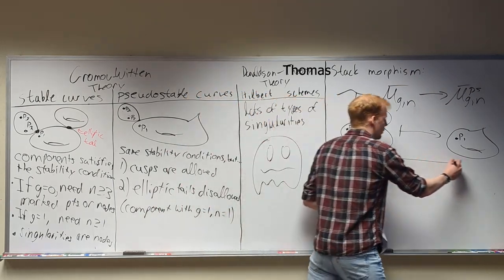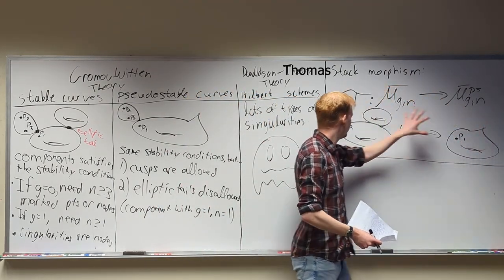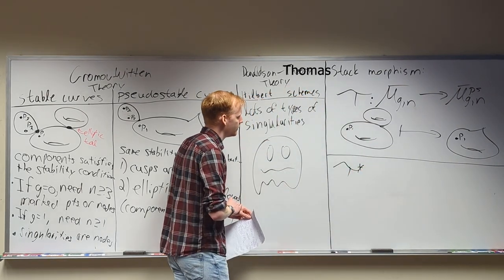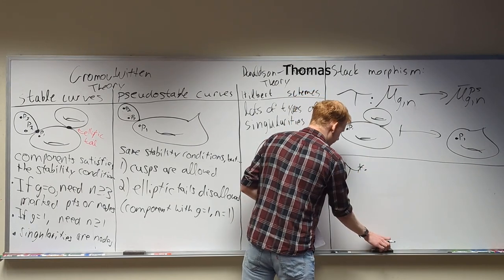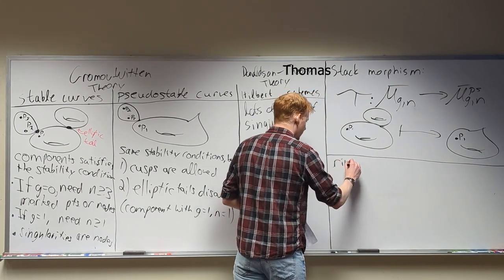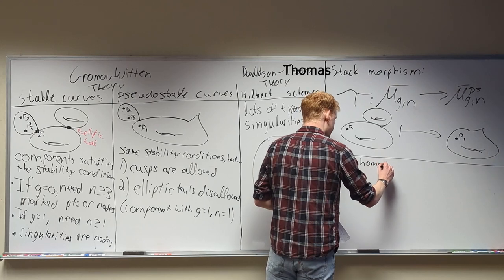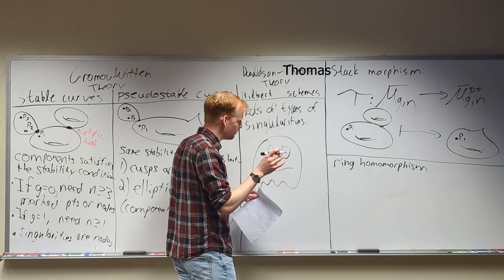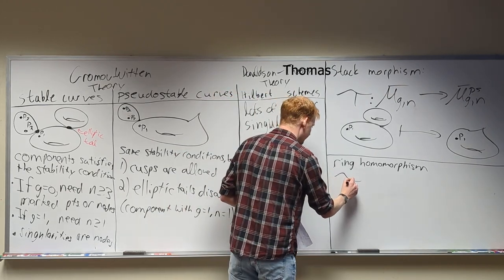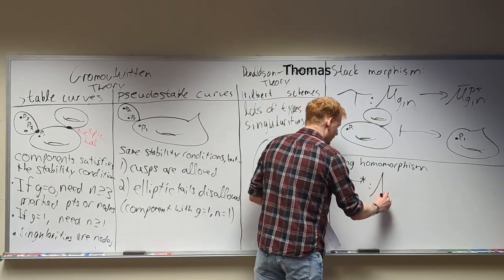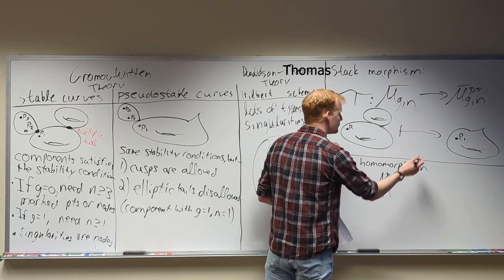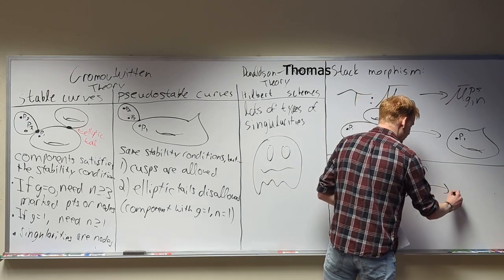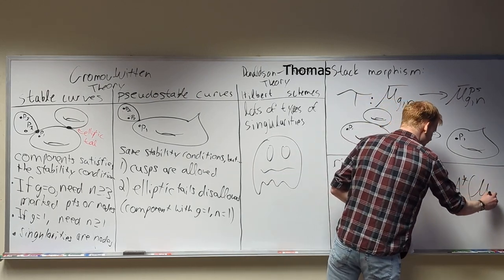But we want to go the other way — we want a ray gun that takes bears and turns them into people. For that, we look at the pullback. This pullback is going to be a ring homomorphism on Chow rings. I'll talk more about what a Chow ring is in a moment. It's the pullback from the Chow ring of pseudo-stable M̄_{g,n} to the Chow ring of stable M̄_{g,n}.